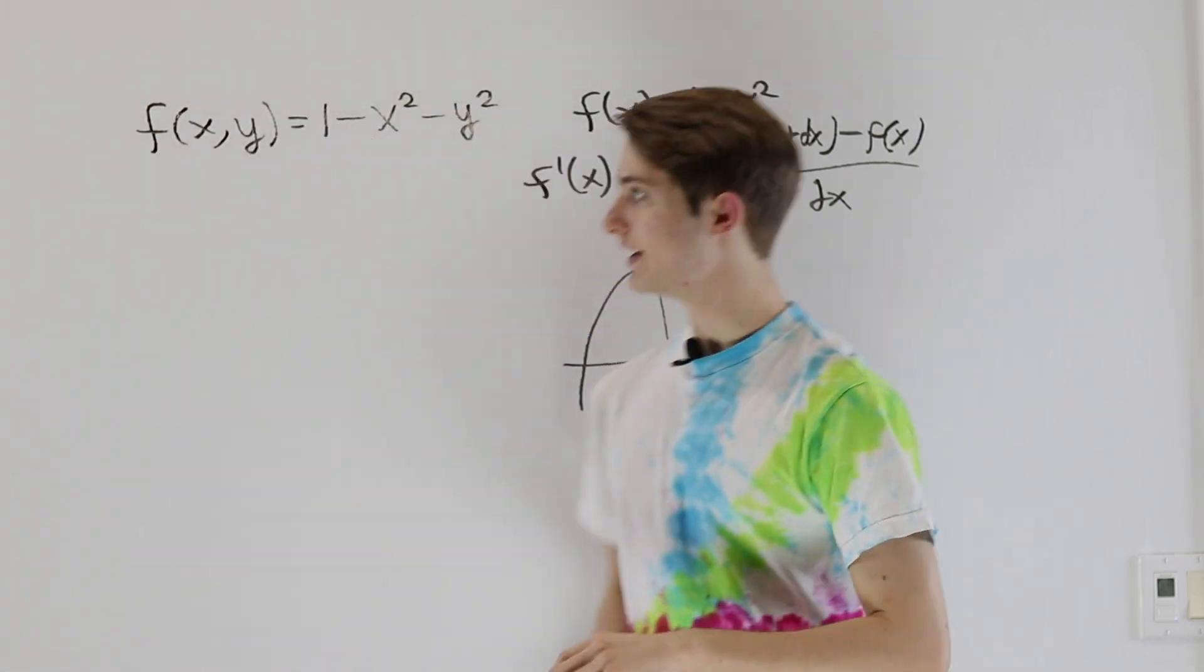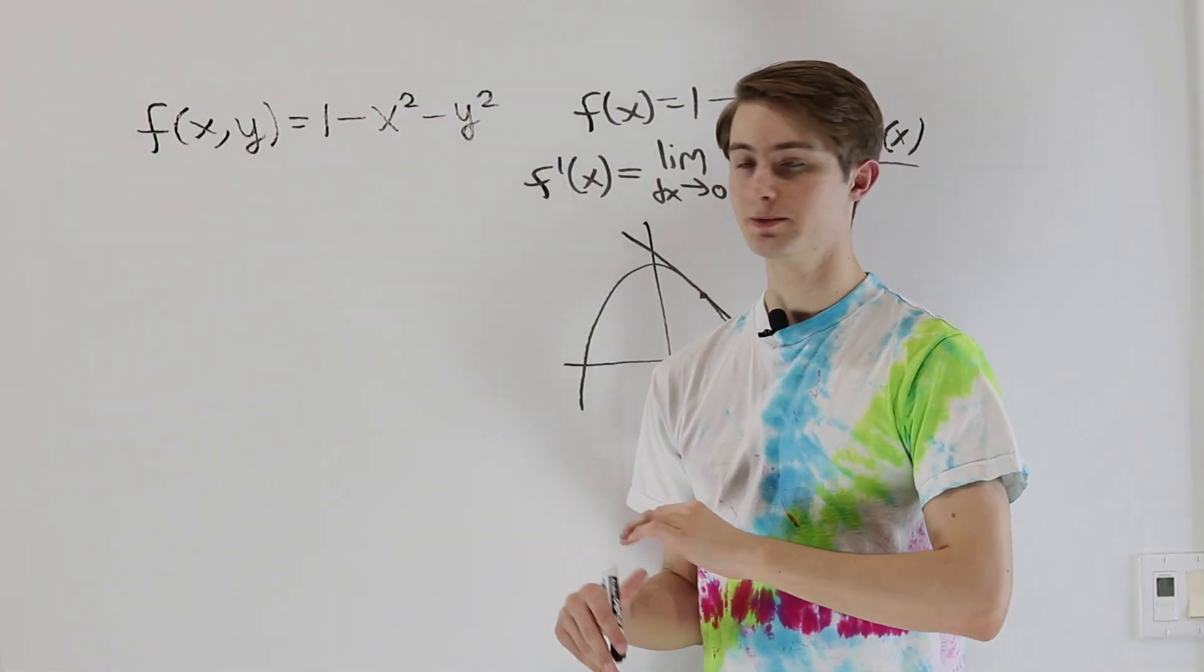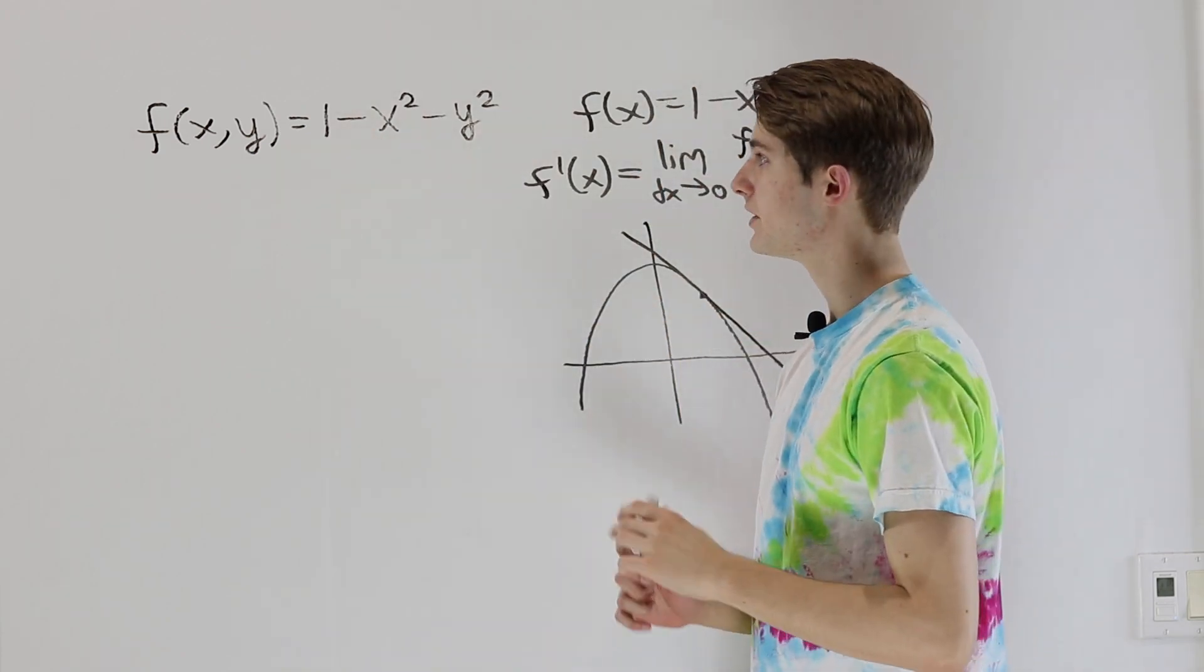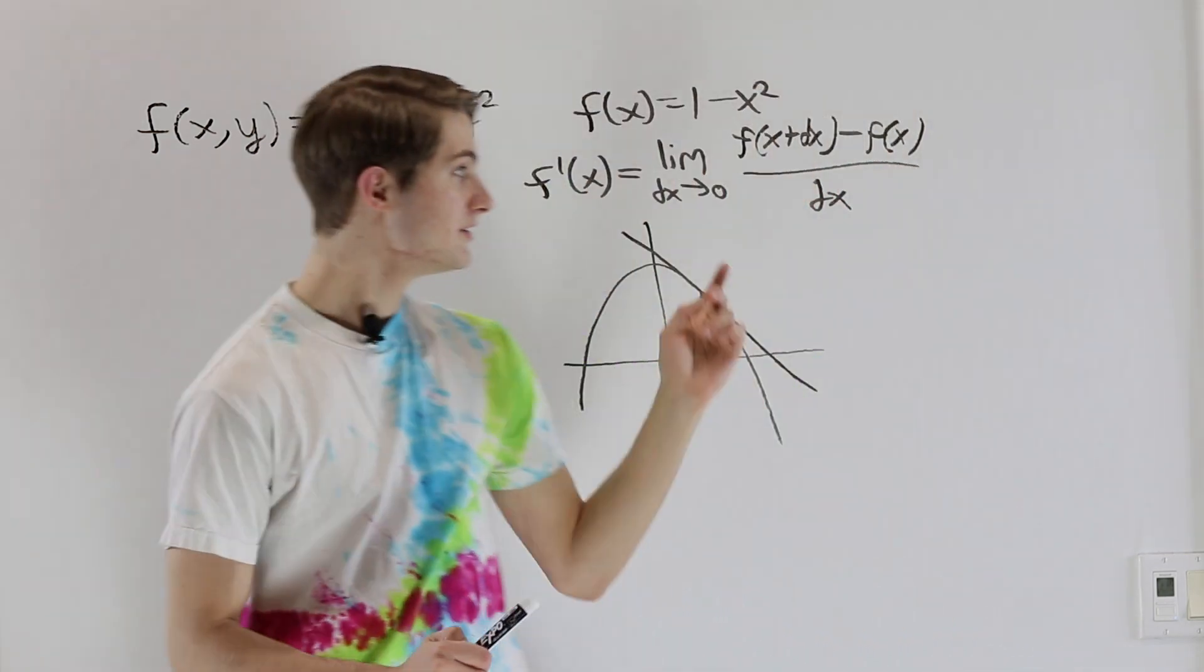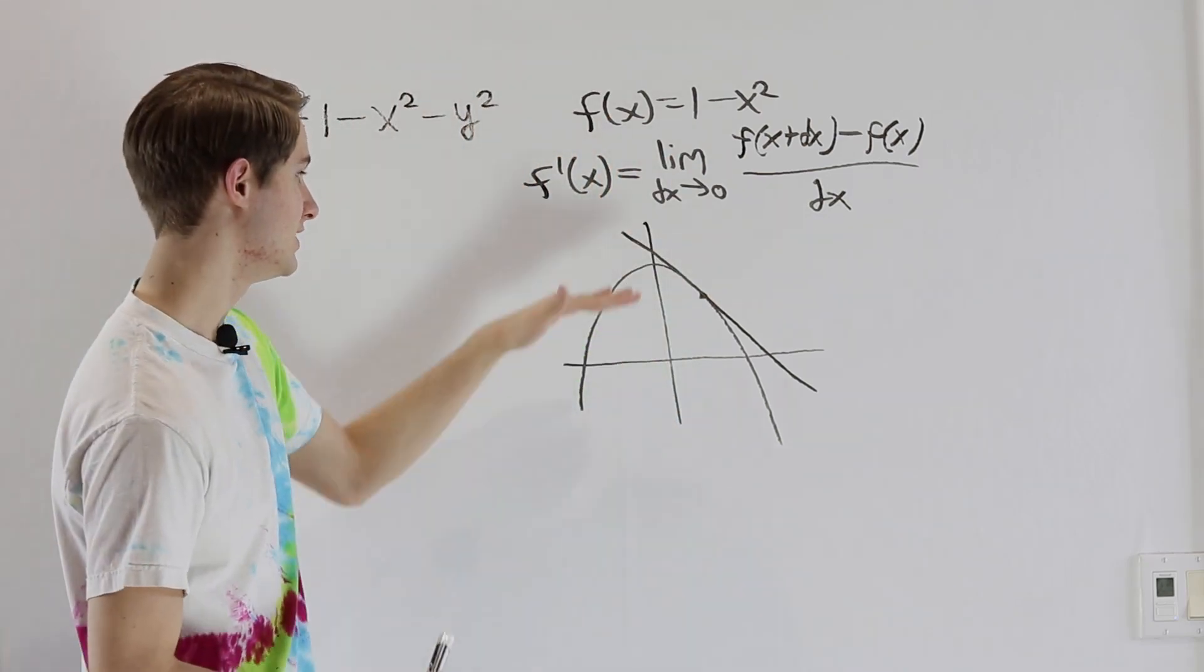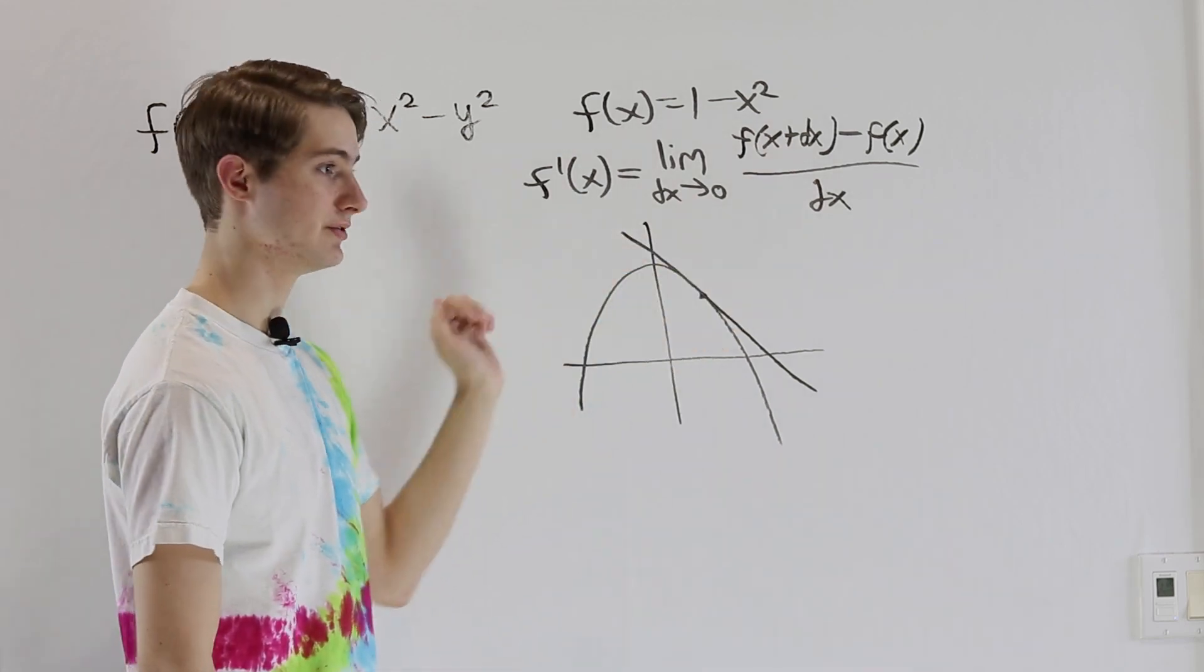So let's try to extend that to our 2 variable case when we have 1 minus x squared minus y squared. Well, the issue here is in this case when we talk about small changes, there's really only one direction that our function can change. It's going to go in this horizontal direction.